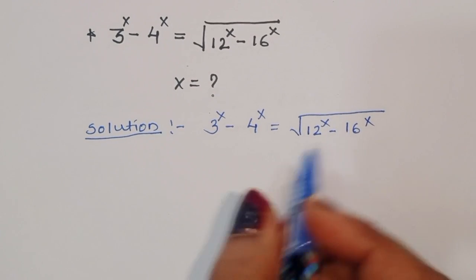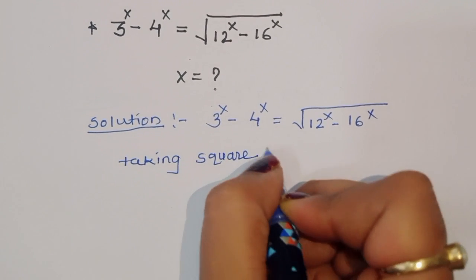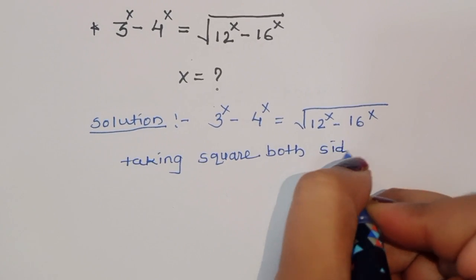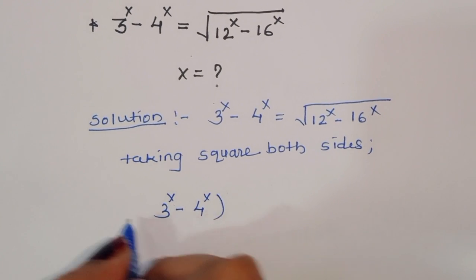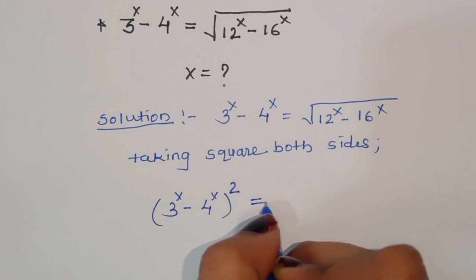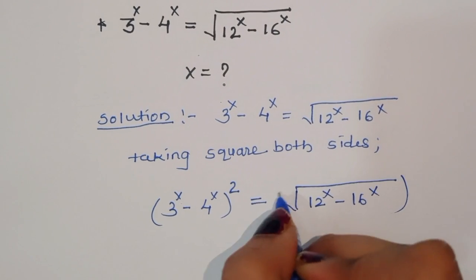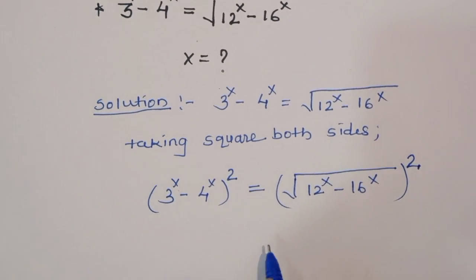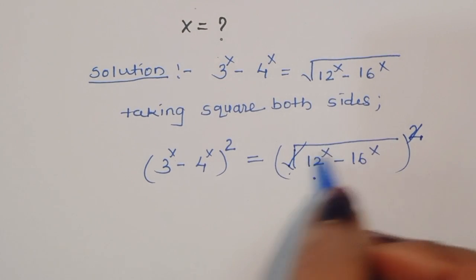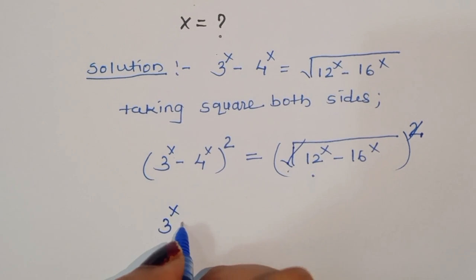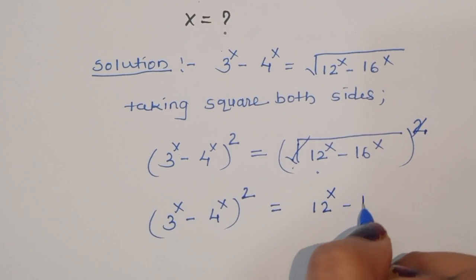Now we can do one thing here — taking square on both sides. Then we will get (3^x minus 4^x)^2 is equal to the square root of (12^x minus 16^x) squared. When we take the square, the square and square root cancel each other.